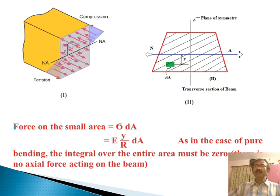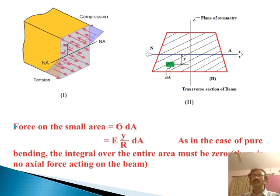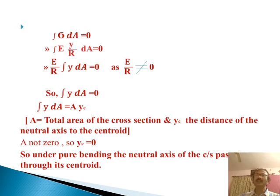As in the case of pure bending, the integral over the entire area must be zero, since there is no axial force acting on the beam. After integration, we get E by R integration of y dA equals zero. E by R is a constant term that is not zero. Obviously, integration y dA equals zero. Integration y dA equals A times y_c, where A is the total area of the cross section. Since A is not zero, y_c is zero. So under pure bending, the neutral axis of the cross section passes through the centroid.